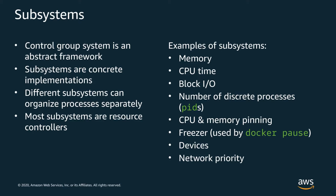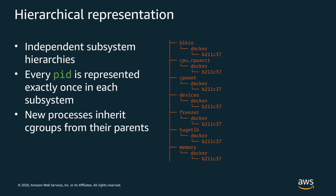Cgroups also give you the ability to limit or prioritize what resources are available to a group of processes. You interact with cgroups through subsystems — the control groups feature is really an abstract framework, and the subsystems are concrete implementations bound to resources. There are many different subsystems available in Linux; most are resource controllers that can track or limit a particular kind of resource. Each subsystem is independent and can organize processes separately from each other.